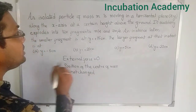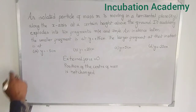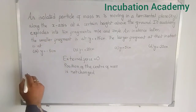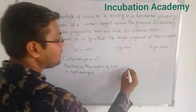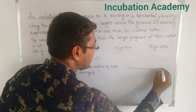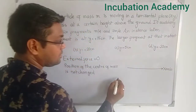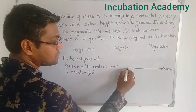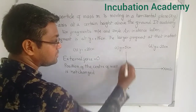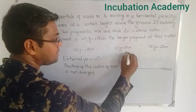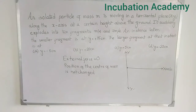Now, how is the particle moving before this explosion? It is moving along the x-axis at a certain height above the ground. So it is moving along the x-axis — this is my x-axis, and the origin is here, with y as the y-axis.